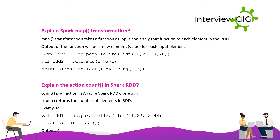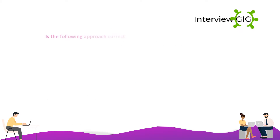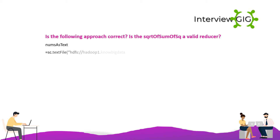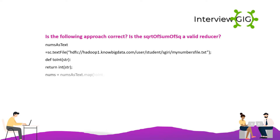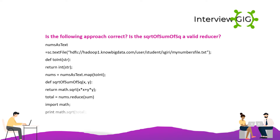Is the following approach correct — is sqrt(a_sum_of_sq) a valid reducer? numbs_as_text = sc.textFile('hdfs://hadoop1.nobigdata.com/...'); def to_int(str): return int(str); numbs = numbs_as_text.map(to_int); def sqrt_a_sum_of_sq(x, y): return math.sqrt(x*x + y*y); total = numbs.reduce(sum); import math; print(math.sqrt(total)). Yes, the approach is correct and sqrt_a_sum_of_sq is a valid reducer.